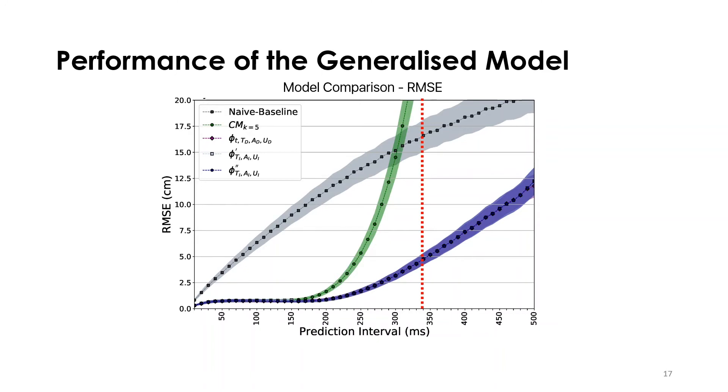We also note that 340 milliseconds has the upper limit for our model, where our model's R squared score decreases below 0.9.